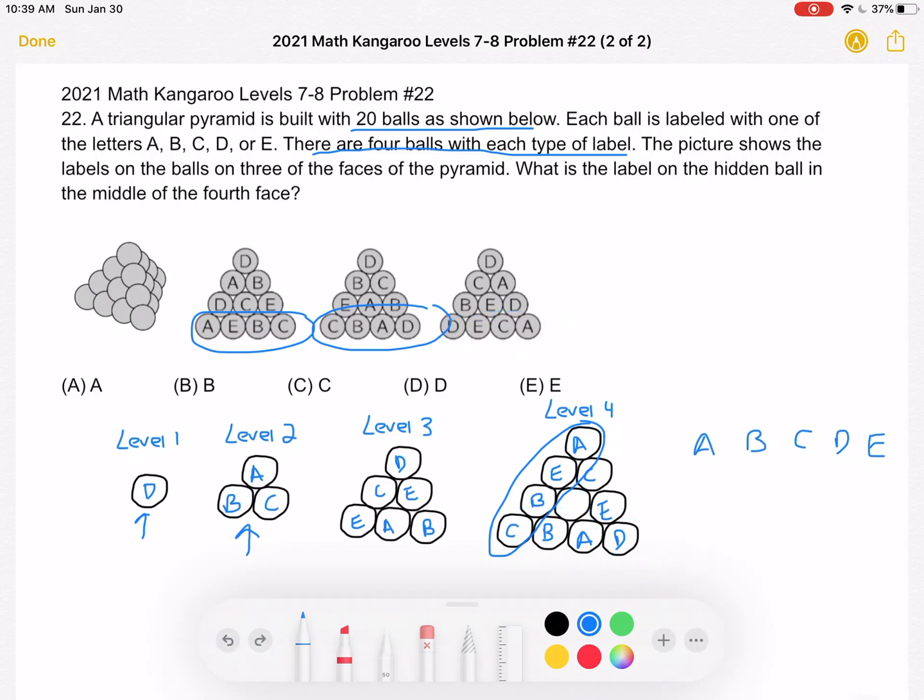So those are the four levels that we've gotten from looking at our pictures. Now let's count the number of each letter that we have. Let's start with A. So we have one, two, three, four. So all the A's are represented because we know we have four of each letter.